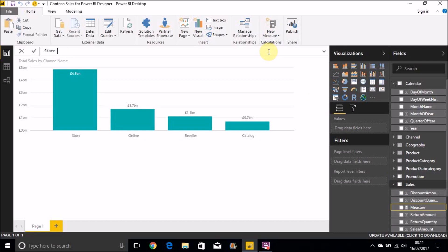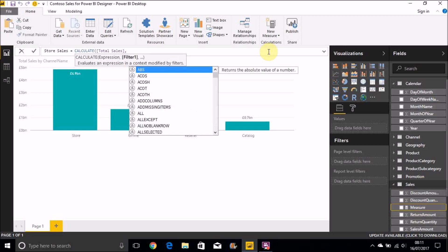Let's create a new measure. Let's have Store Sales equals, now we use the CALCULATE function. We pass Total Sales in as the first expression. And now what that's going to do is it's going to iterate over the Sales table and it's going to pick out the Total Sales measure, but we're going to put in a filter context here.